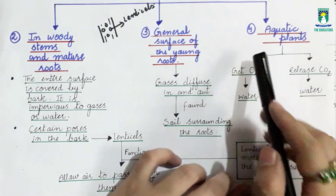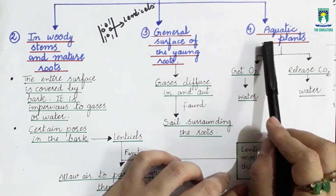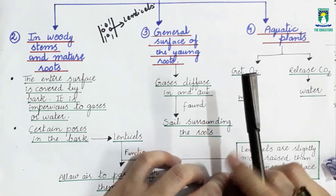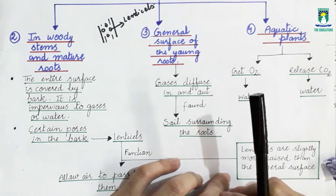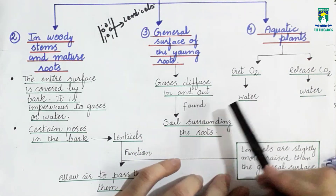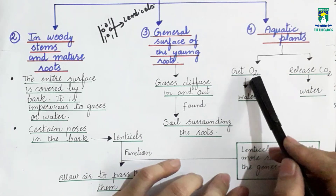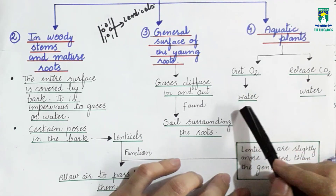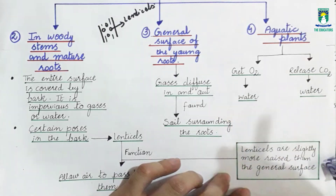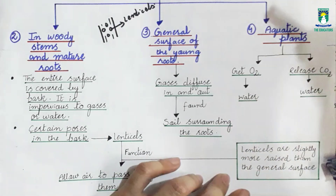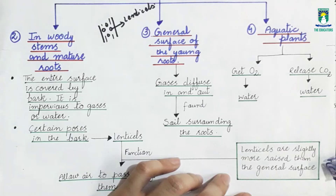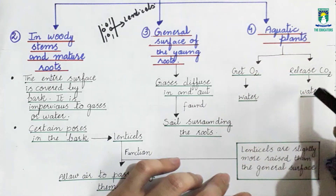Now let's discuss how gaseous exchange occurs in aquatic plants. In aquatic plants, oxygen is obtained through water, as dissolved oxygen is present in the water. Plants absorb this dissolved oxygen, and through the respiration process, carbon dioxide is released back into the water.